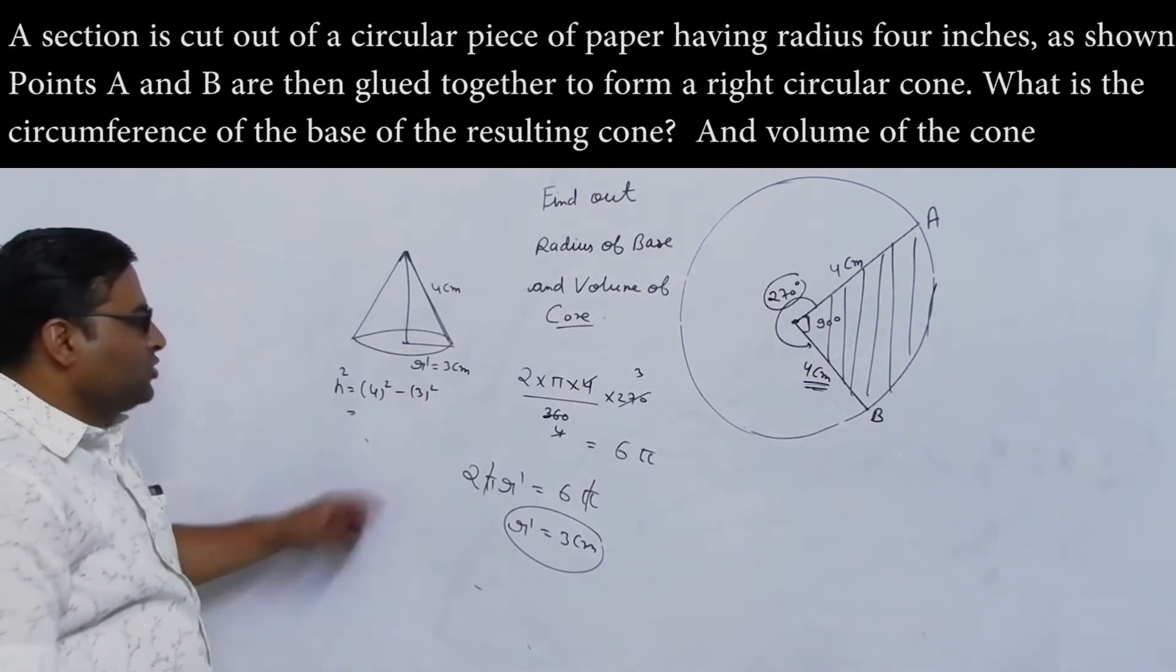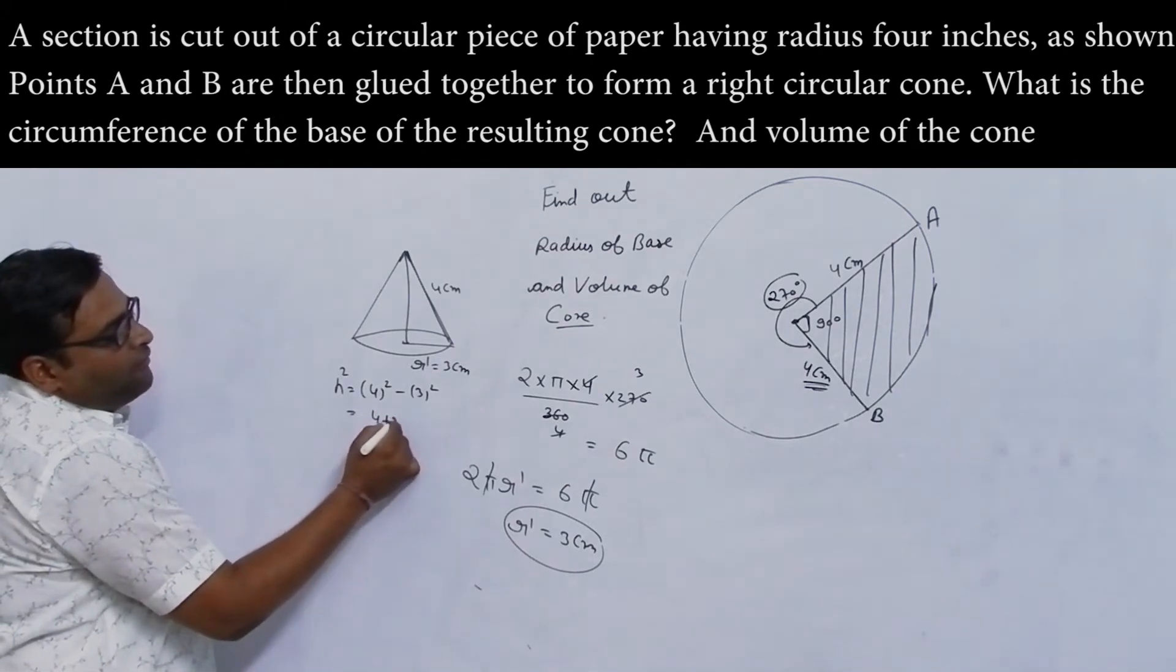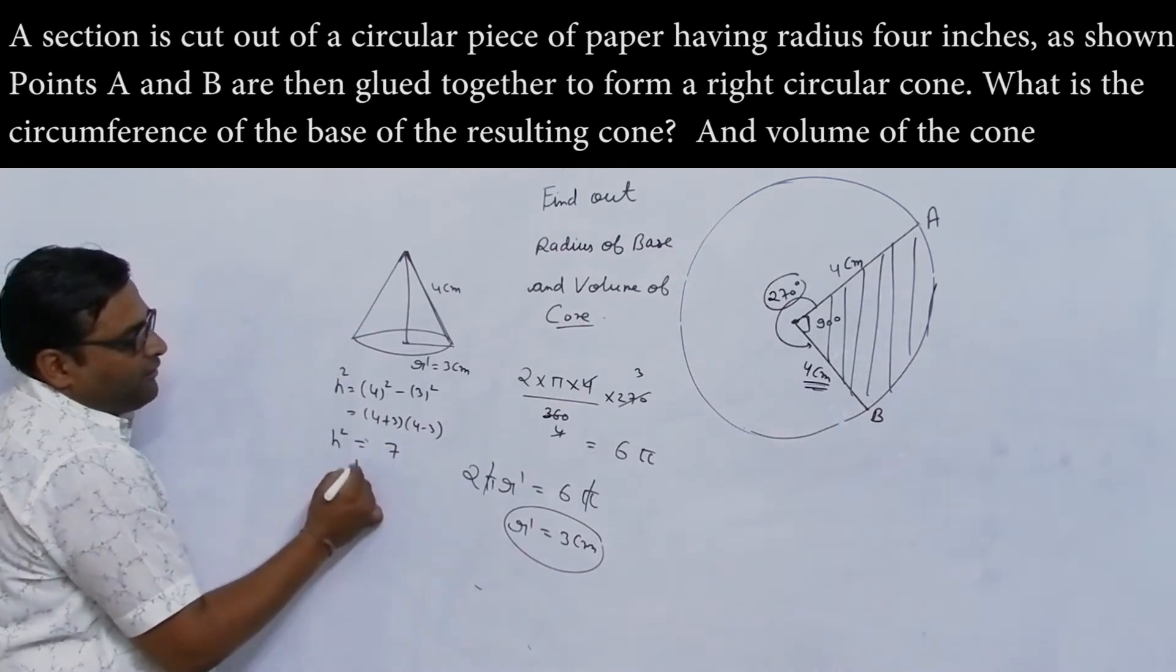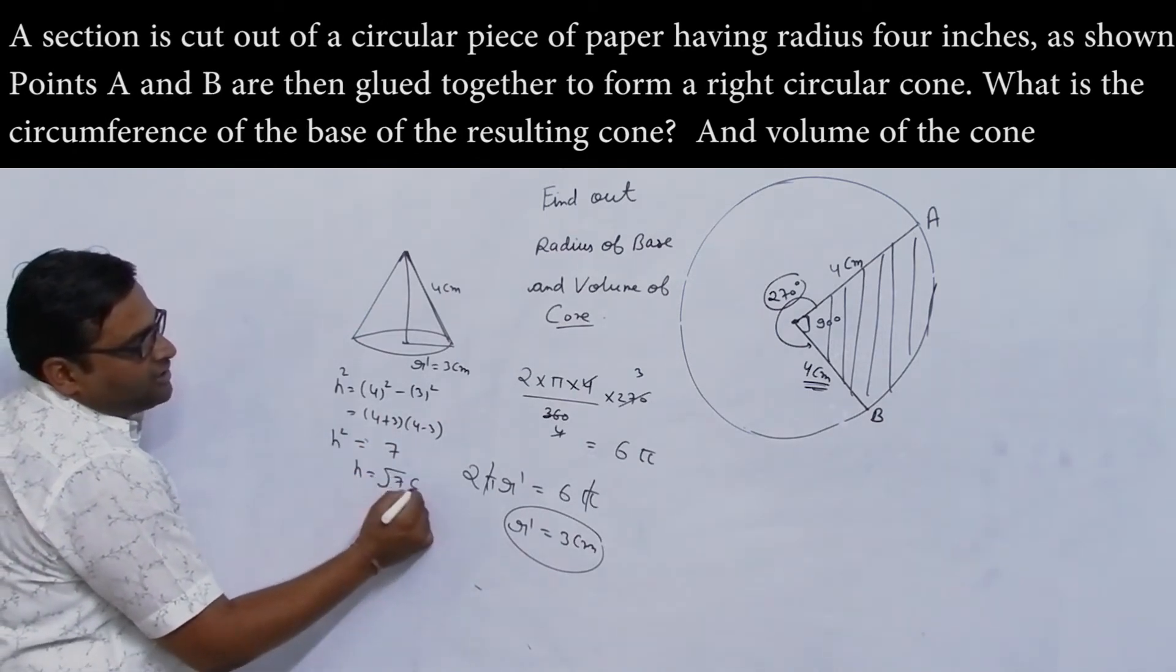So this will become 4 plus 3 and 4 minus 3. This will be 7. h squared equals 7, h is root 7 centimeters.